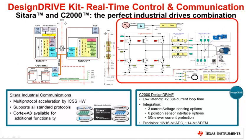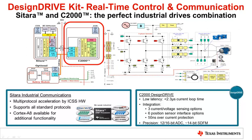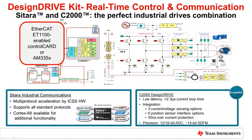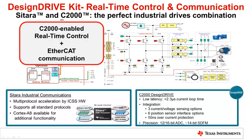Here you can see the drive circuitry, the C2000 block providing real-time control, and a Sitara AM335X providing real-time communication. Today we are introducing the EtherCAT ET1100-enabled daughter card, which enables the C2000 system to handle both functions of real-time control and communication.